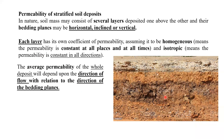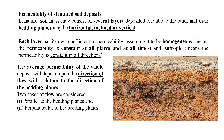The average permeability of the whole deposit will depend upon the direction of flow in relation to the direction of bedding planes. Suppose one pond is on this side — the seepage is going to take place parallel to the bedding planes, because water is available on this side. So the direction of flow will be parallel to the bedding plane. And suppose water is falling in the rainy season from the top — in that case the direction of flow will be perpendicular to the bedding plane. So these two conditions we are going to discuss today.